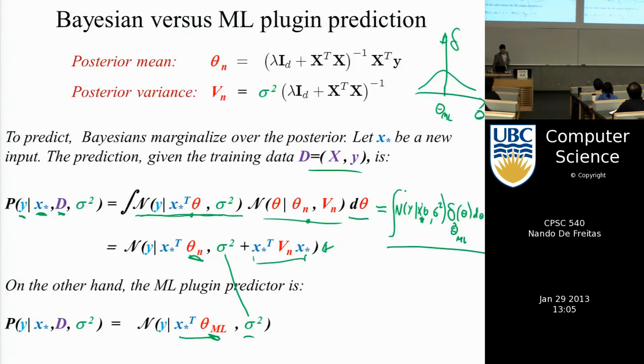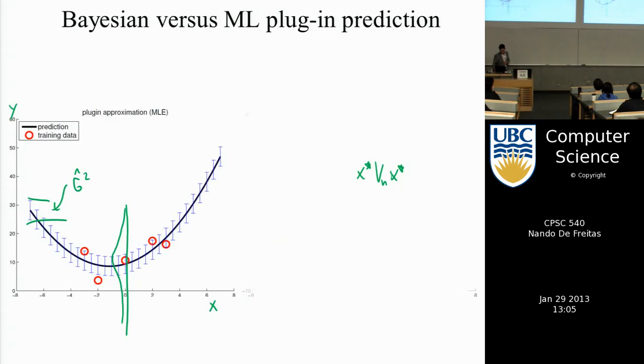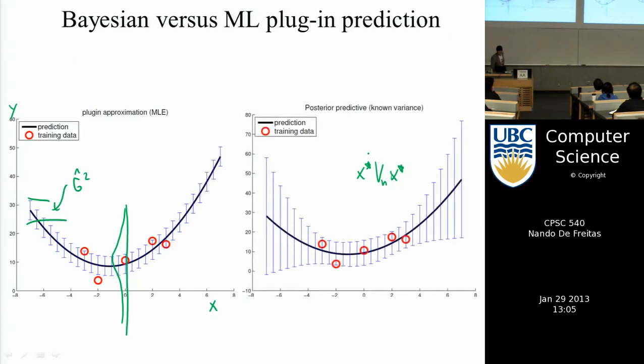We'll ensure that where we have data, so this would be these bars here. Where we have data, because now the height of the bars is data dependent. Where we have data, those bars will be narrow. Where we don't have data, those bars will be high.